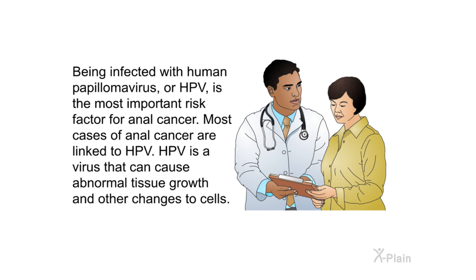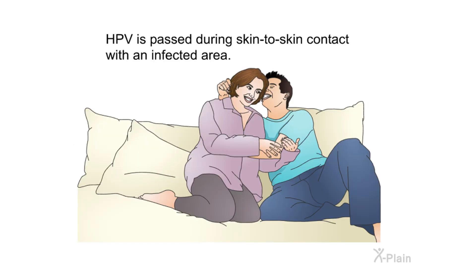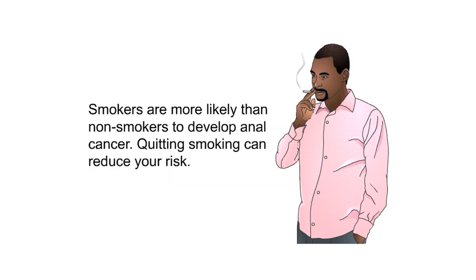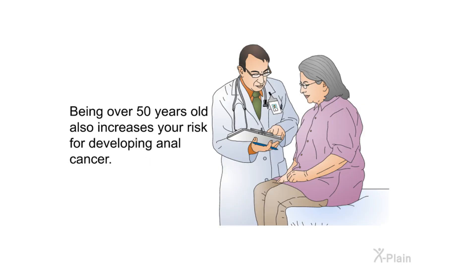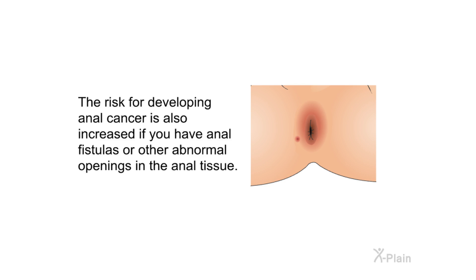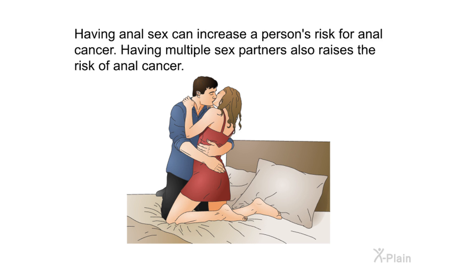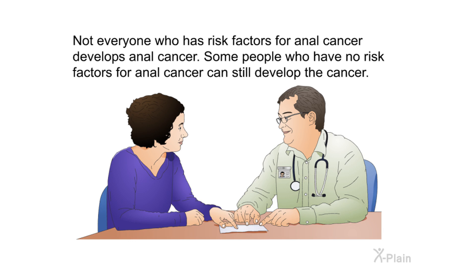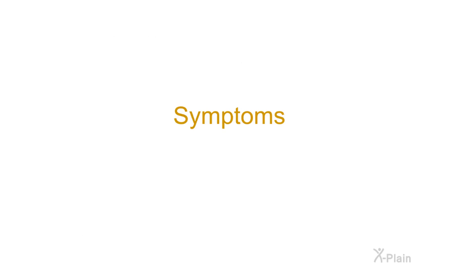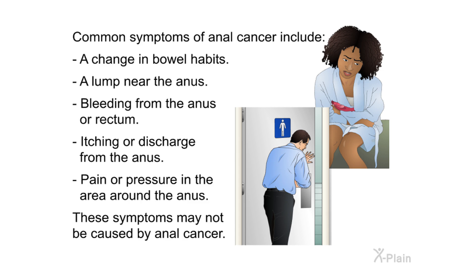Most cases of anal cancer are linked to HPV. HPV is a virus that can cause abnormal tissue growth and other changes to cells. HPV is passed during skin-to-skin contact with an infected area. Smokers are more likely than non-smokers to develop anal cancer; quitting smoking can reduce your risk. Being over 50 years old also increases your risk. Having anal fistulas or other abnormal openings in the anal tissue, having anal sex, or having multiple sex partners also raises the risk of anal cancer.